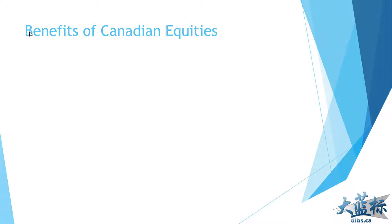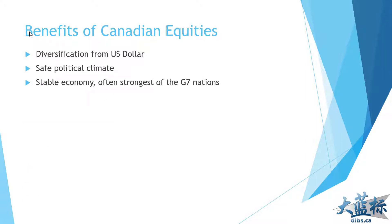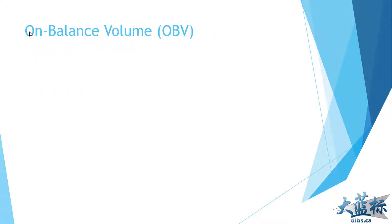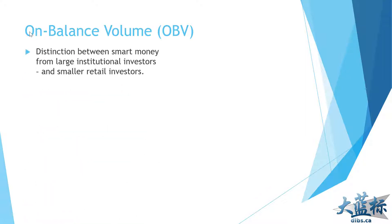We'll be using Canadian equities for our examples, which offer fantastic diversification from the US dollar, a safe political climate, stable economy, and excellent bid-ask spreads for Canadian stocks — companies like Blackberry, Royal Bank, Shopify, Bombardier, and others. We'll also introduce a new indicator today that I personally find very valuable to complement what we showed previously with the MACD and RSI: something called on balance volume.